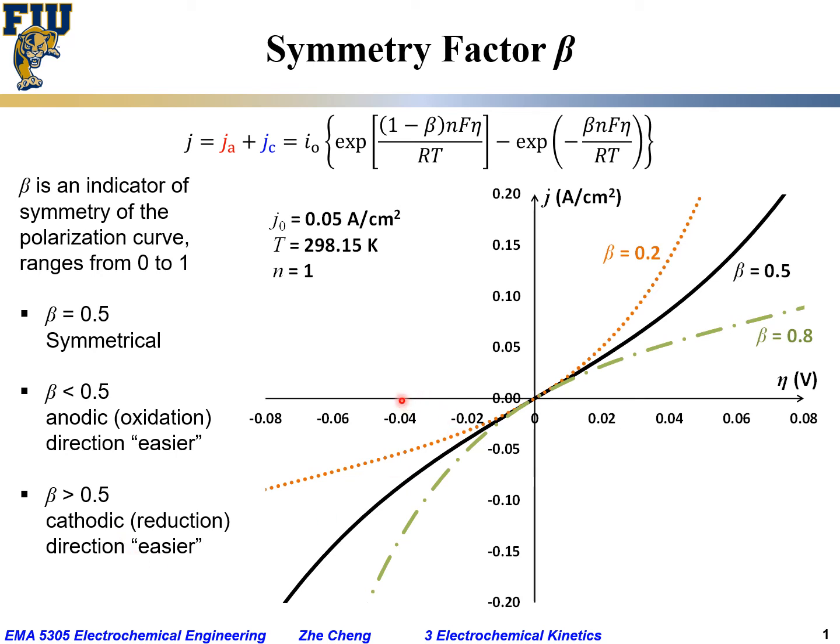For example, at the same overpotential of 40 mV, the cathodic current can be around 0.15 amp, while for the anodic, it's only 0.05 amp.